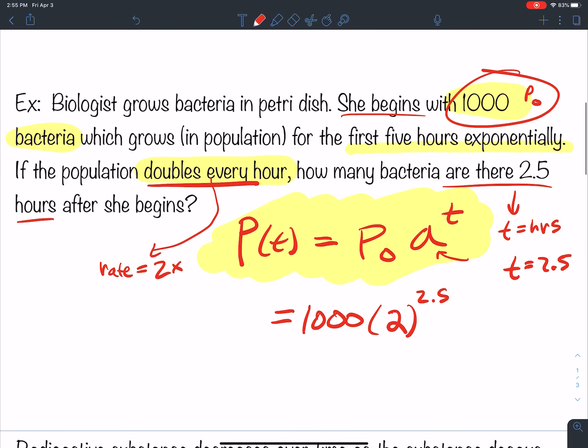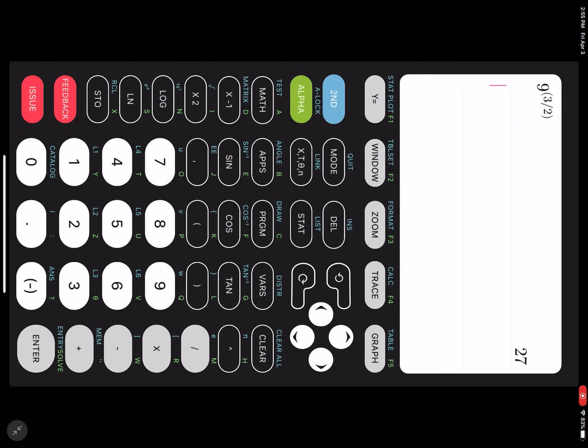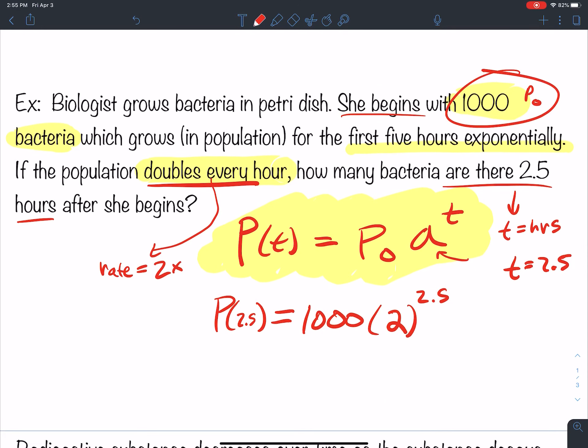So I type this into my calculator. So P of 2.5 is equal to, well, let's type it into our calculator. A thousand times 2 raised to the 2.5. Enter. 5656.85. So I'm not going to have a part of a bacteria, so I'm going to round up to the whole number of bacteria. 5657. So 5657 bacteria. Round to the nearest bacteria here. Whatever the rounding tells you to do in the problem, that's what you'll do. Round to what makes sense. And that's all there is to it. Not too bad.